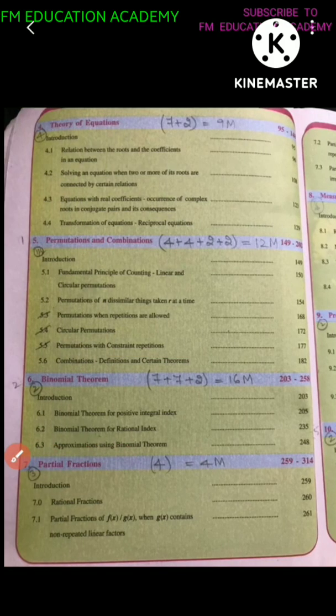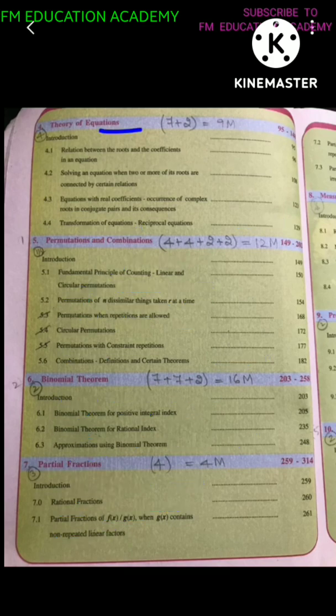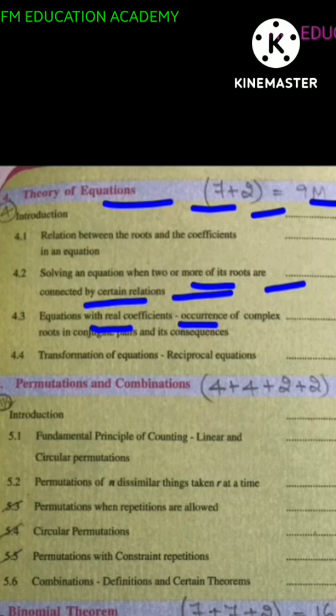Then chapter 4, you have relation between the roots and the coefficients and chapter 4 is of 9 marks, 7 marks and 2 mark questions from this. Solving an equation when two or more of its roots are connected by certain relations, equations with real coefficients, occurrence of complex roots in conjugate pairs and its consequences, transformation of equations, reciprocal equations.